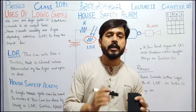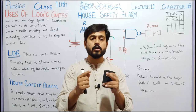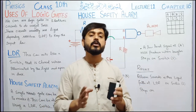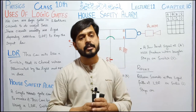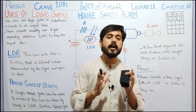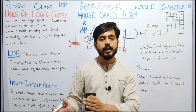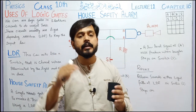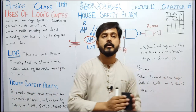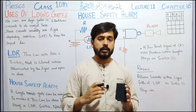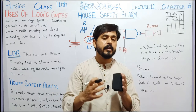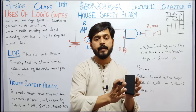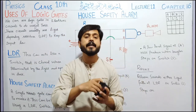To explain LDR — the Light Dependent Resistor — I have briefly revised the concept of resistance and resistor for you, so these ideas come back to your mind. Resistance is the opposition to the flow of current. So a Light Dependent Resistor is basically a switch — a resistance that is totally dependent on light. As long as light falls on it, current continues to flow through it.